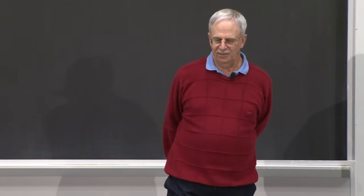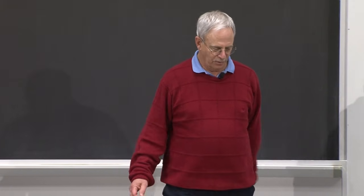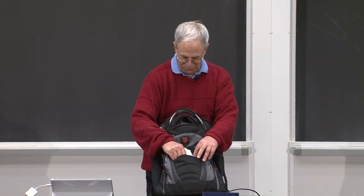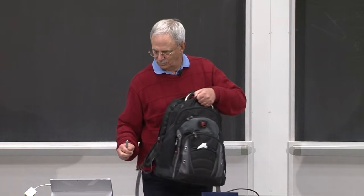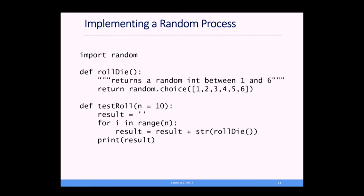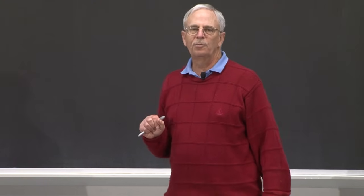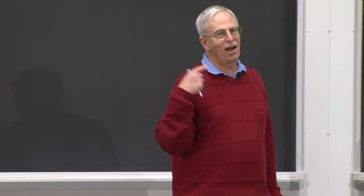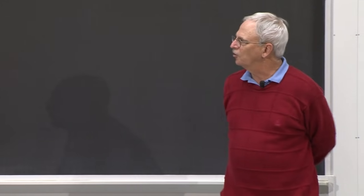The first specification returns an int between 1 and 6 — it's underdetermined; you can't tell what it's going to return. The second specification requires randomness: it returns a randomly chosen int, requiring a stochastic implementation. We implement a random process in Python by importing the library random and using random.choice, which takes a sequence and randomly chooses one member uniformly — equally probable that it will choose any number in that list each time you call it.